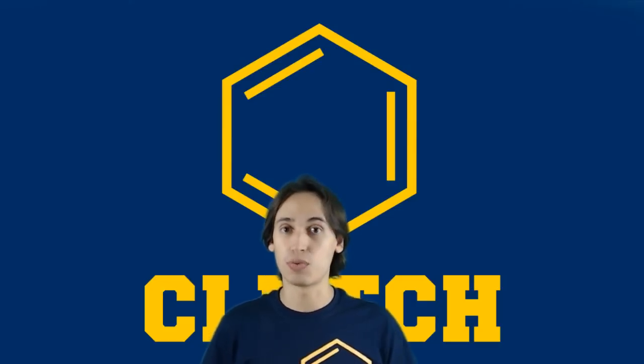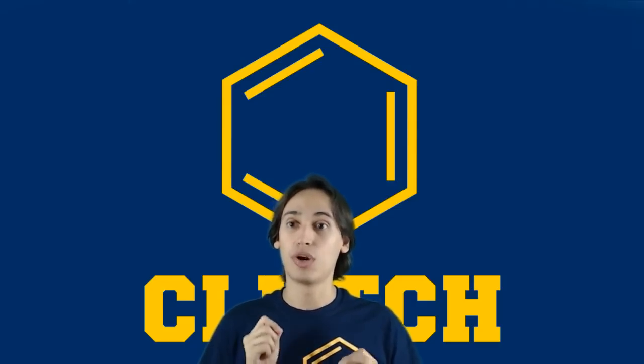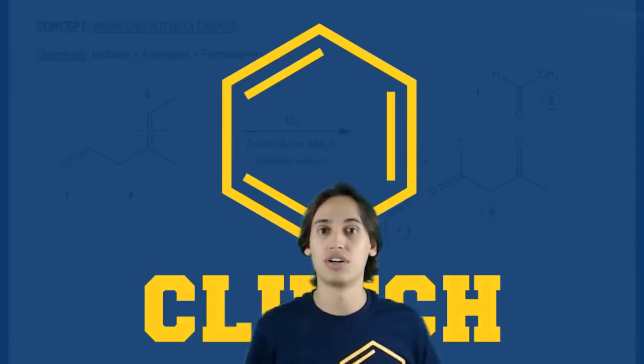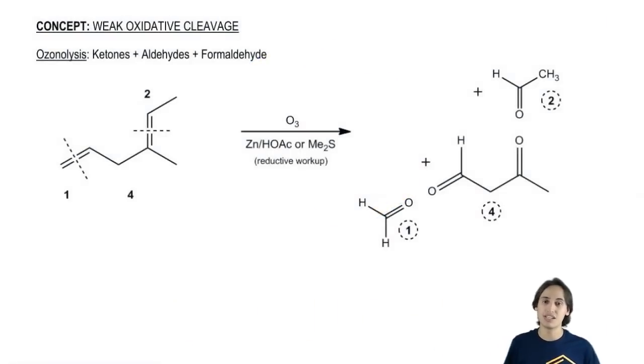So what we're going to talk about is some different ways to do that and what I want to talk about right now is ozonolysis. Ozonolysis would be categorized as a reaction that is a form of weak oxidative cleavage. So what does that mean? Basically cleavage just means to cut something. So this entire time we're going to be using our visual scissors to cut things into different pieces.